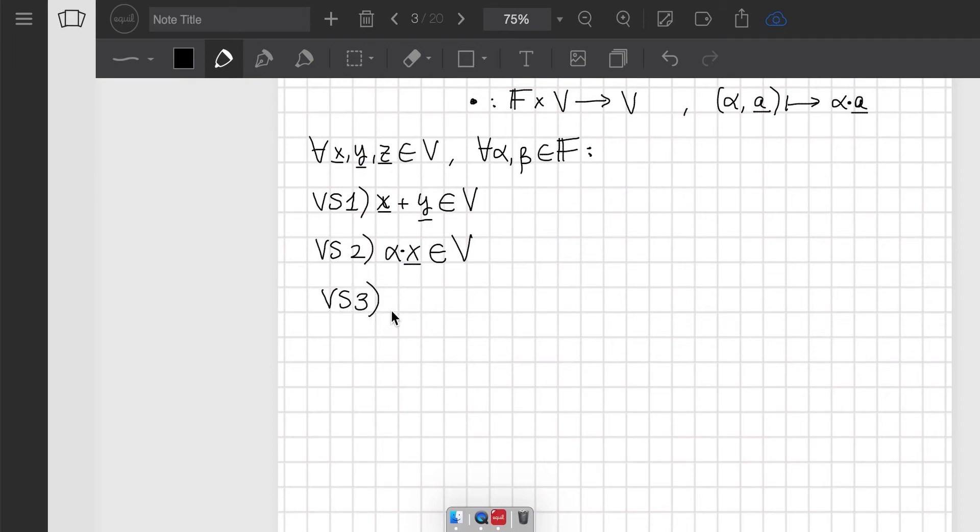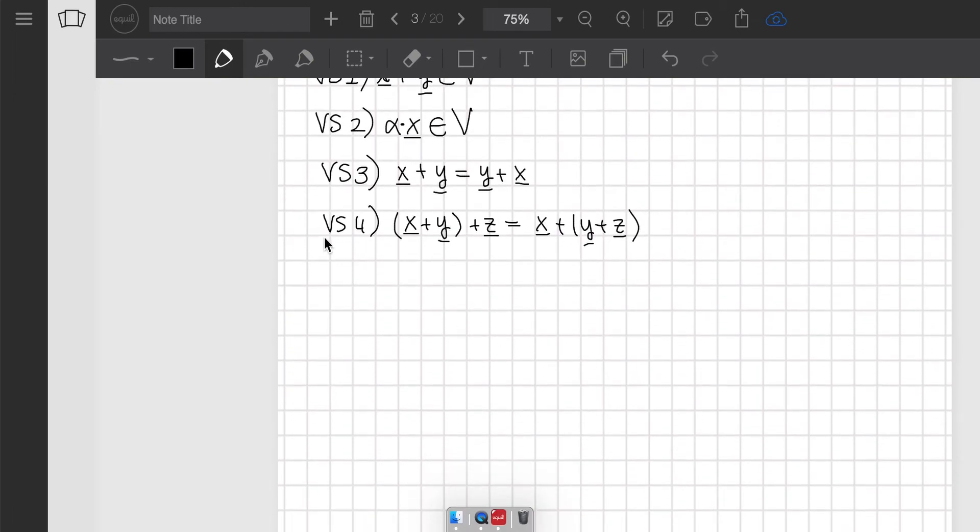Then VS3 states that addition is commutative. So if we take x plus y, this must be equal to y plus x. Then VS4 says that addition is also associative. So it doesn't matter what order the addition is done, even when you have parentheses and all these things. So for example, if we sum x plus y first and then add z, this is the same as doing x and then adding y plus z. So these are the main ones that have to do with addition.